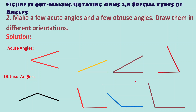Question 2: Make a few acute angles and a few obtuse angles and draw them in different orientations. The first, second, third, and fourth figures shown are all acute angles, each less than 90 degrees with changed orientations. Then for obtuse angles, the first, second, third, and fourth figures drawn are all obtuse angles, shown in different orientations.